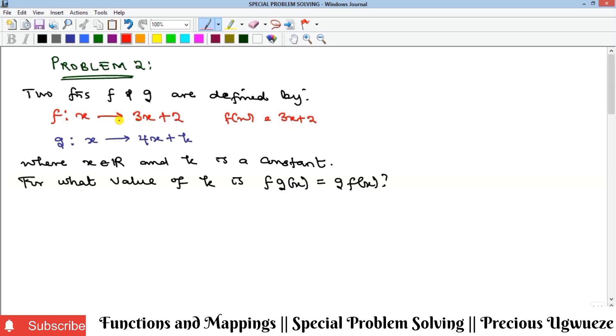F is mapped into this, and then g(x) is this, where x is a real number, meaning the domain is the real number space. K is a constant, also a real number. So it says, what value of k will make this possible?